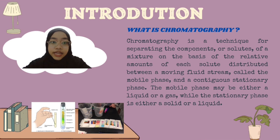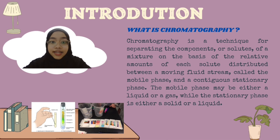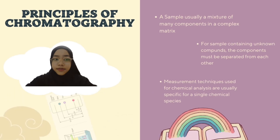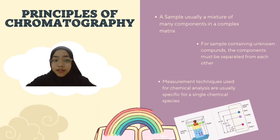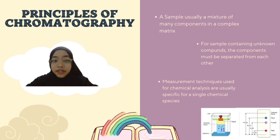The stationary phase is either a solid or a liquid. All types of chromatography contain a stationary phase to adsorb or absorb the mixture being separated, and a mobile phase which passes over the stationary phase and competes with it for the constituents of the mixture. Now, what is the principle of chromatography?